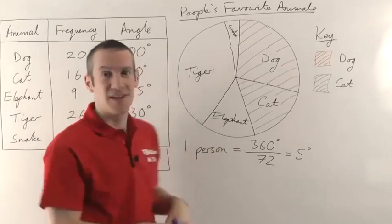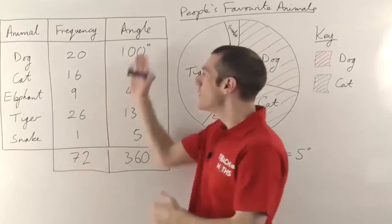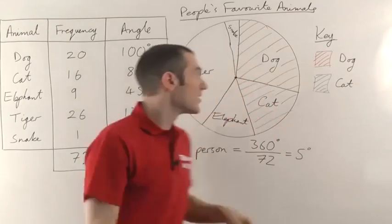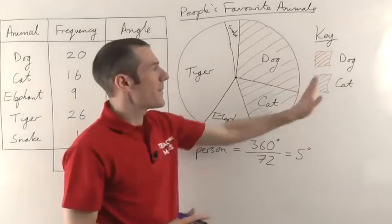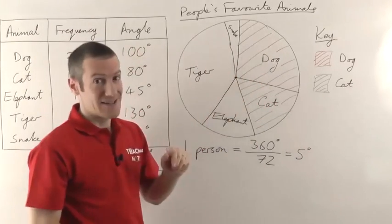So that's how you construct a pie chart. You start with a frequency table, work out the angles that I've explained, use your protractor to draw them in, make sure you give it a key and a title.